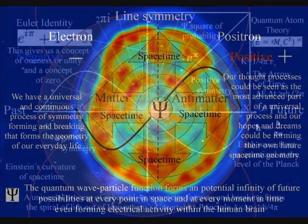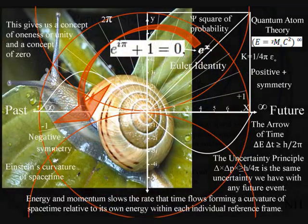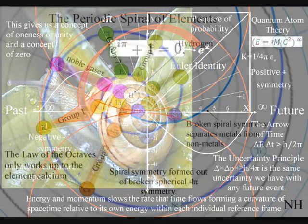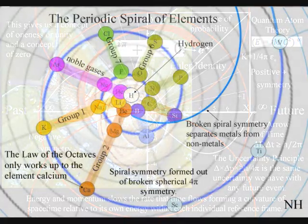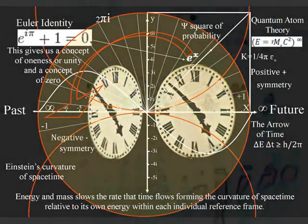This process is totally universal and interactive. From the largest object to the smallest creature, right down to the smallest element of the periodic table, will slow the rate that time flows forming a curvature of space-time relative to its own energy or mass.